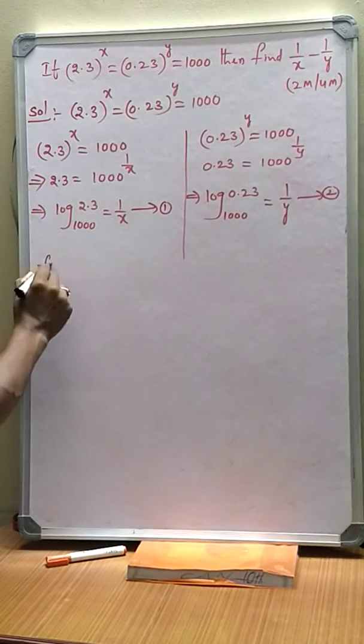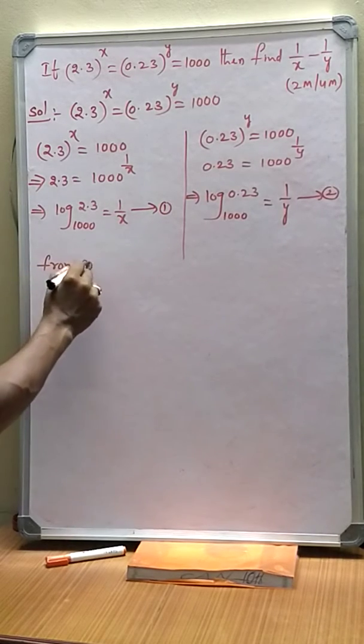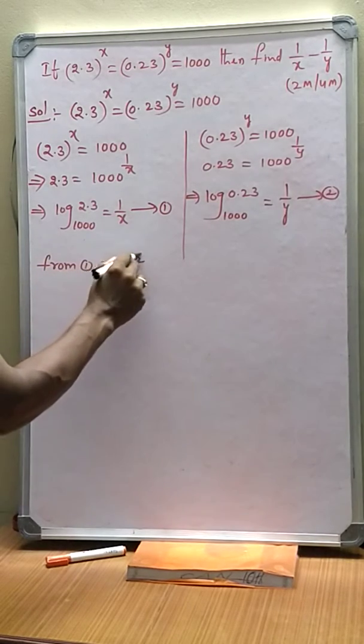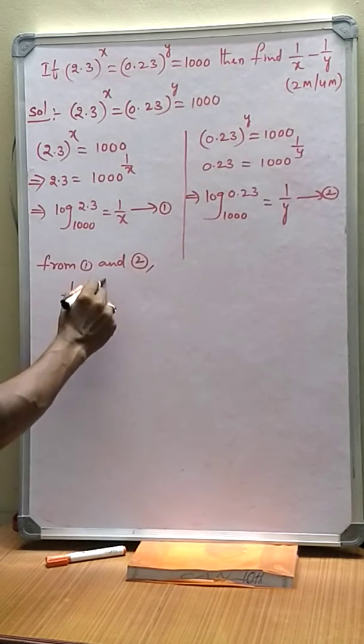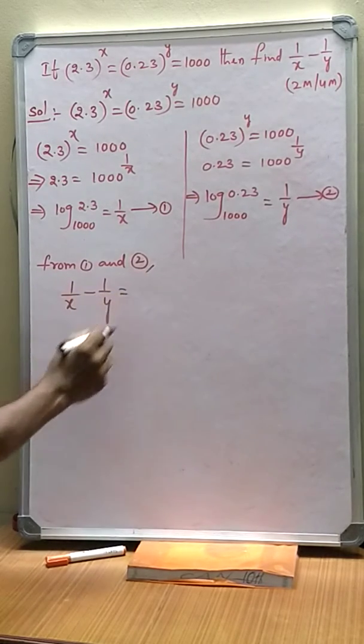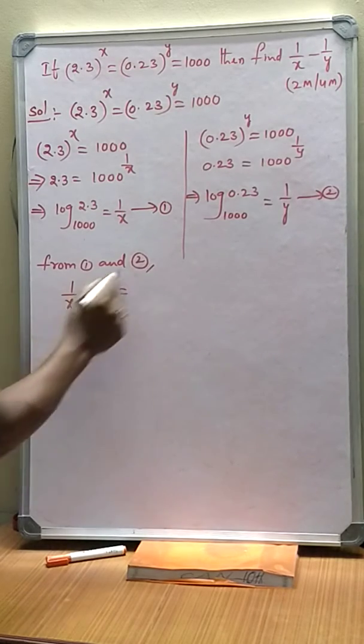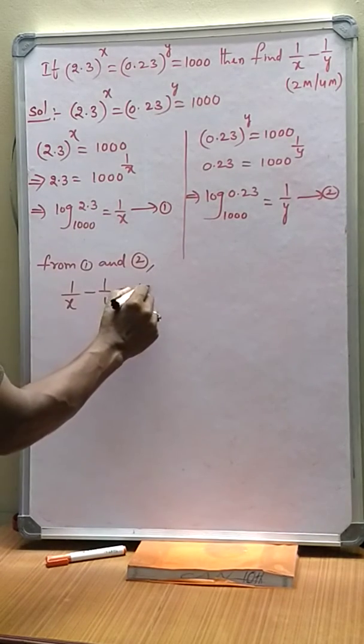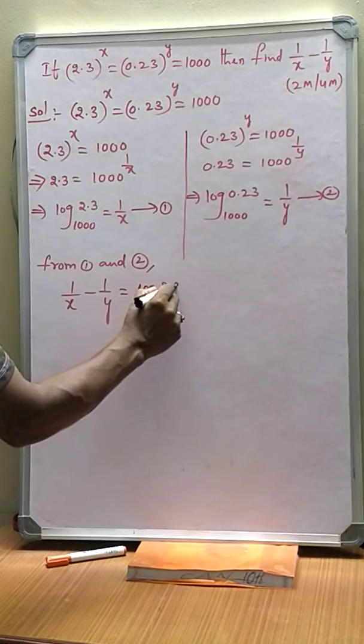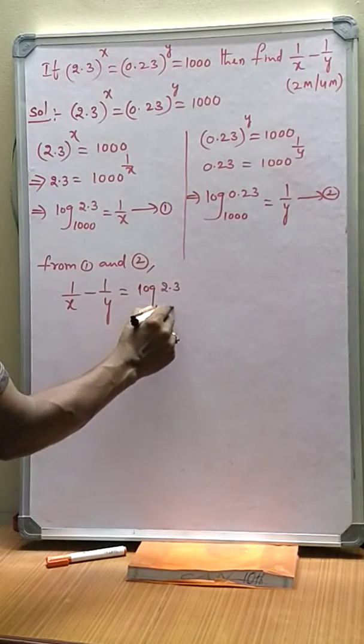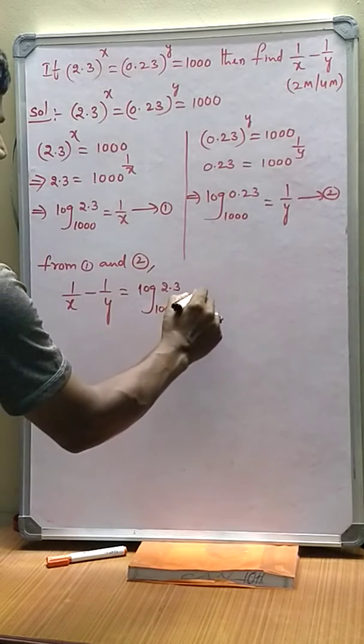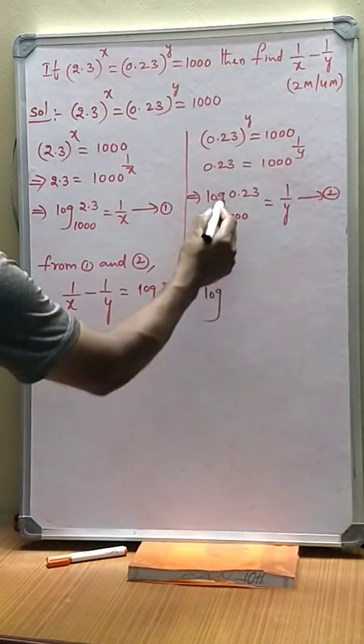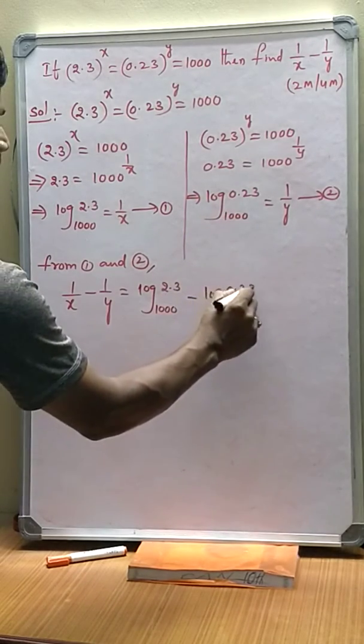Now, from equations 1 and 2, 1 by x minus 1 by y equals 1 by x means log 2.3 base 1000 minus 1 by y means log 0.23 base 1000.